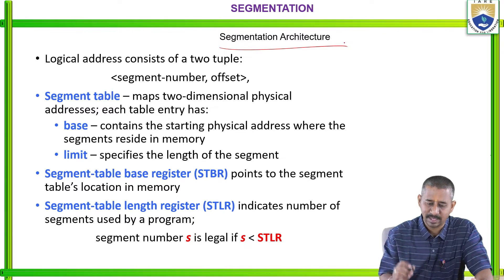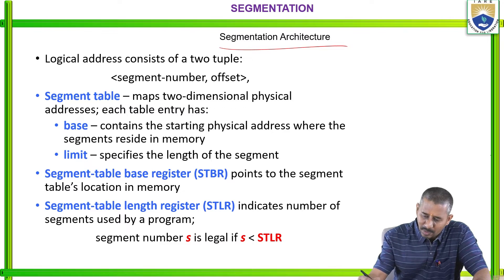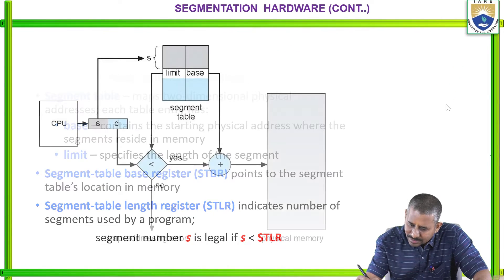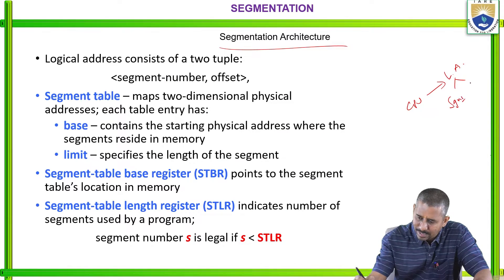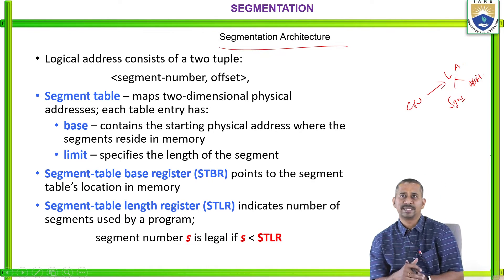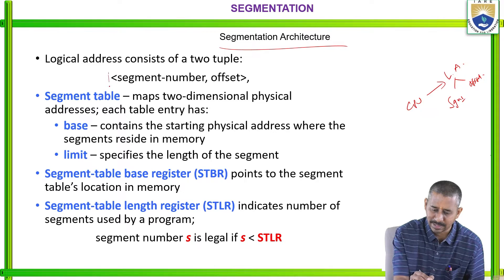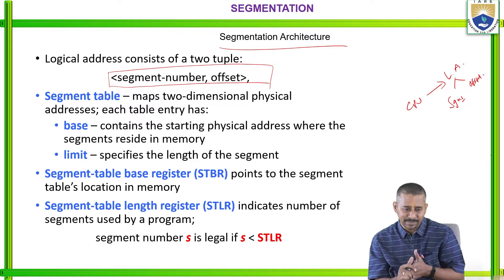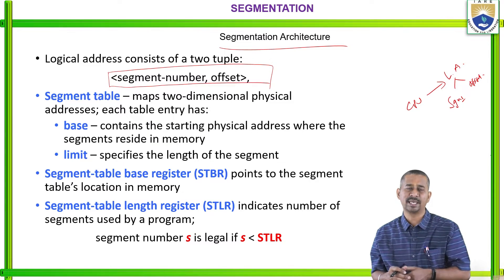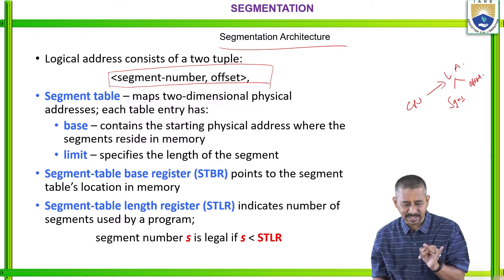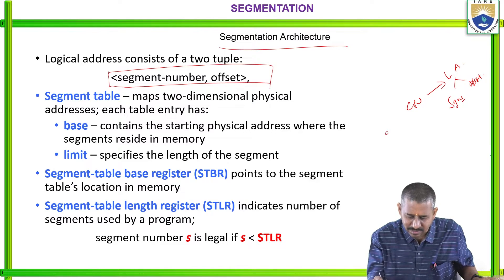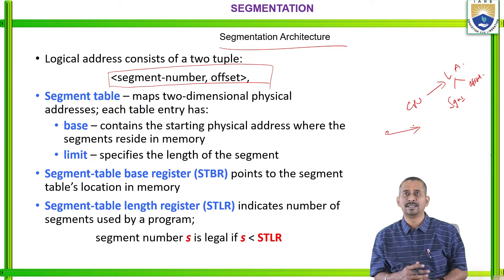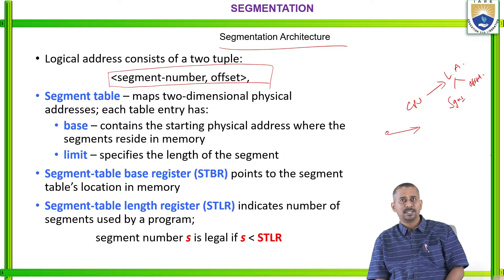Segmentation architecture: whenever the processor generates a logical address, that logical address consists of two components — segment number and offset. The logical address is represented as a tuple: segment number and segment offset. The segment table maps two-dimensional logical addresses to one-dimensional physical addresses. Each table entry has a base address and limit. The base address contains the starting physical address where the segment resides in memory, and the limit specifies the length of that segment.